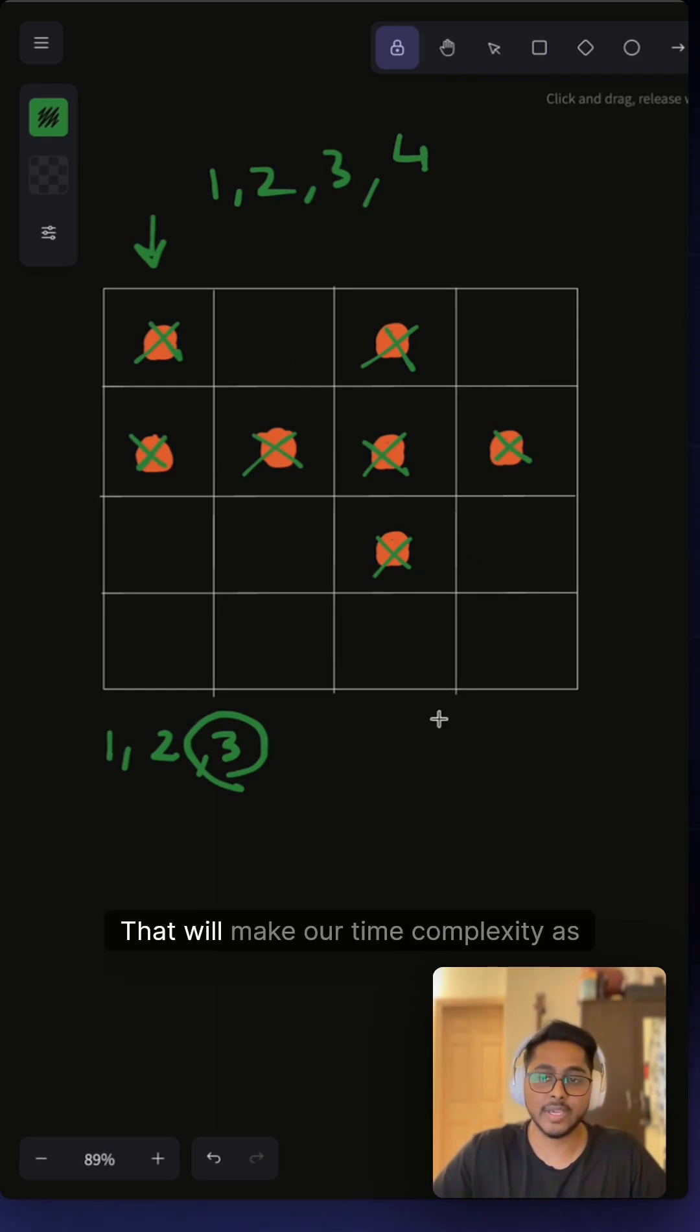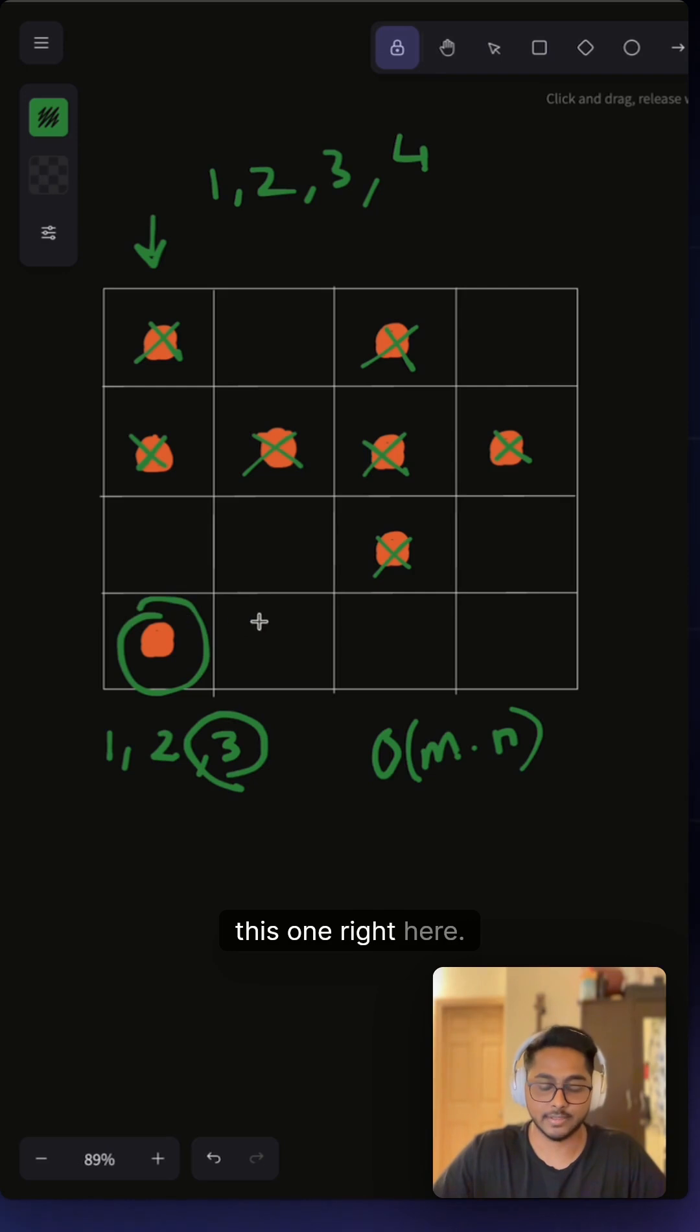element on this grid. That will make our time complexity O(m cross n). There is one more edge case where if it is impossible to turn every orange rotten, then we have to return minus one, for example this one right here.